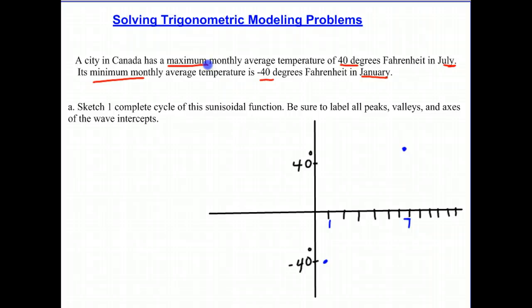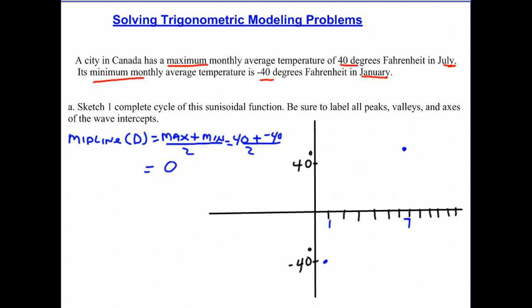This is a sinusoidal function that goes from minimum to maximum. Halfway through it will intersect the midline. The midline, or our value of D, is always equal to the max plus the min over 2. That gives us 40 plus negative 40 divided by 2, which equals 0. Our midline is at the x-axis.